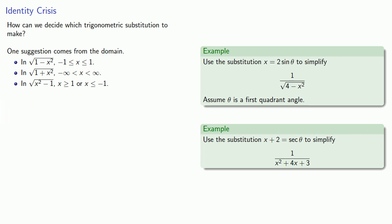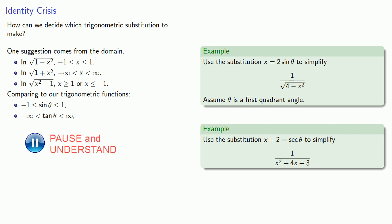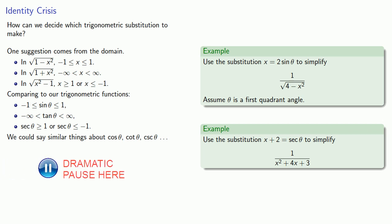And here's the big hint, our trigonometric functions have these same restrictions of the range. So comparing these restrictions to our trigonometric functions, we know that sine of theta must be between negative 1 and 1, tangent of theta could be anything, and secant theta must be greater than or equal to 1, or secant theta must be less than or equal to negative 1. Now, we could say similar things about the other trigonometric functions, cosine, cotangent, and cosecant, but no one uses them.